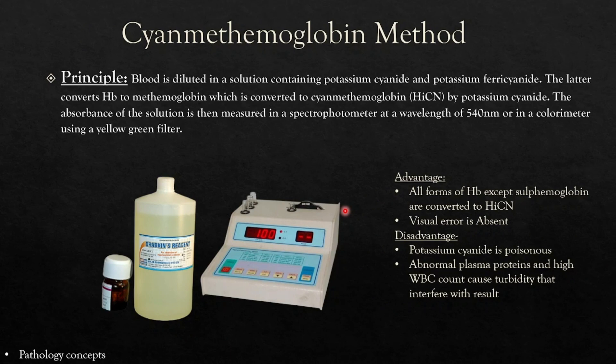Next is the cyanmethemoglobin method. Principle: blood is diluted in a solution containing potassium cyanide and potassium ferricyanide. The latter converts hemoglobin to methemoglobin, which is then converted to cyanmethemoglobin by potassium cyanide. The absorbance is measured by spectrophotometer at 540 nanometers or in a colorimeter using a yellow-green filter. Advantage: all forms of hemoglobin except sulfhemoglobin are converted. The visual error present in Saheli's method is absent. Disadvantage: potassium cyanide is poisonous; abnormal plasma proteins and high WBC counts can cause turbidity that interferes with results.